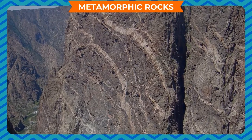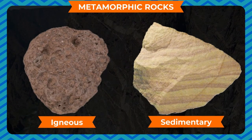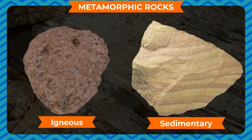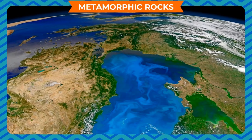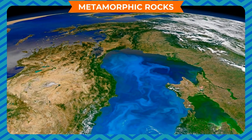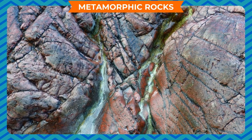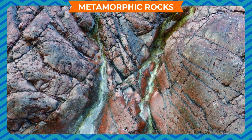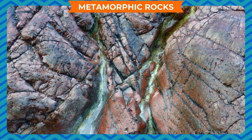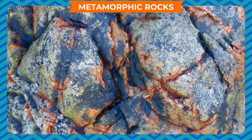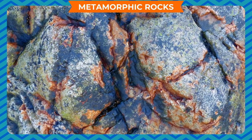Metamorphic rocks. The word 'metamorph' means changed. Metamorphic rocks are formed due to physical and chemical changes in igneous and sedimentary rocks — they are a converted form of igneous or sedimentary rocks. The temperature and pressure inside the Earth is much higher than at the surface. When igneous and sedimentary rocks are affected by great heat and pressure inside the Earth, their physical and chemical properties change to form new rocks called metamorphic rocks.